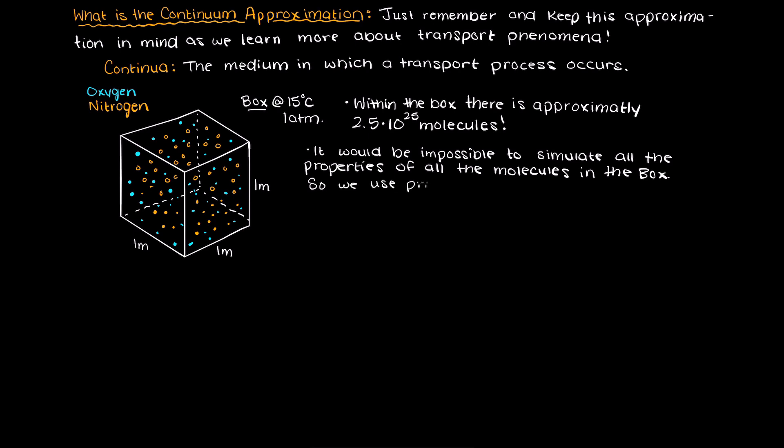Therefore, we use properties like temperature, pressure, and density because through using these properties we don't need to know all the properties of all the molecules simultaneously.